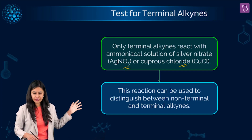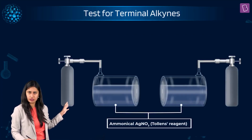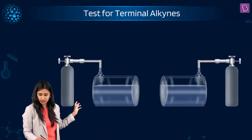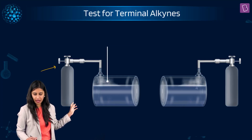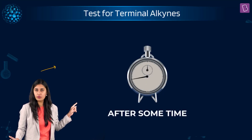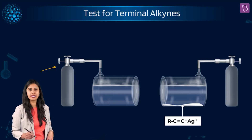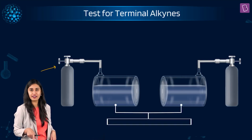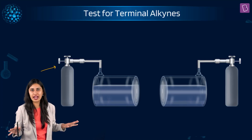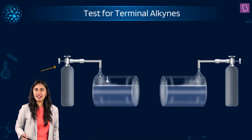Now let's check what is happening. We have taken ammoniacal silver nitrate — also called Tollen's reagent. The first one was a non-terminal alkyne whereas the other one was a terminal alkyne. For the terminal alkyne we are getting a white ppt with the Tollen's reagent, whereas the non-terminal alkyne gives no reaction. Are you ready for a previous year question?